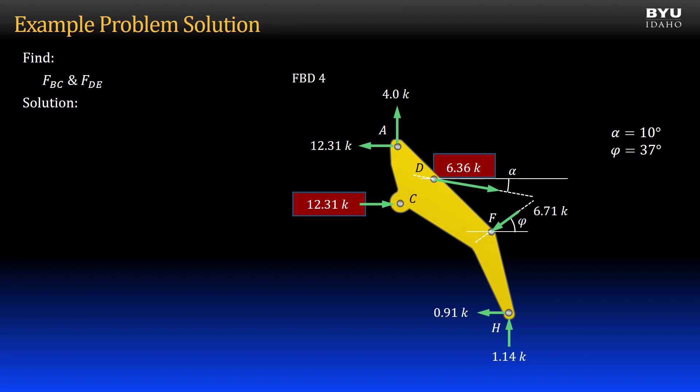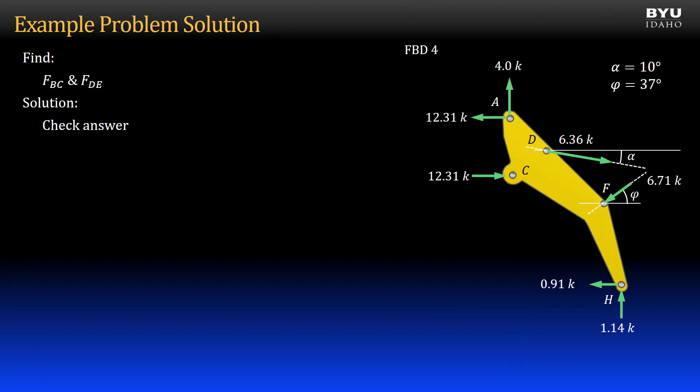But we can use it now to check our answers. This is a good thing to do when you need to know your work is correct. If I sum forces on free body diagram 4 in the X direction, they sum to 0. That is a good sign. If they did not equal 0, I would know I have one or more errors. When I sum forces in the Y direction, they also sum to 0. Now I am feeling really good about my answers.